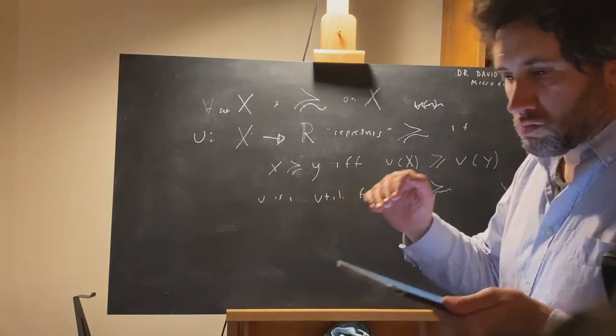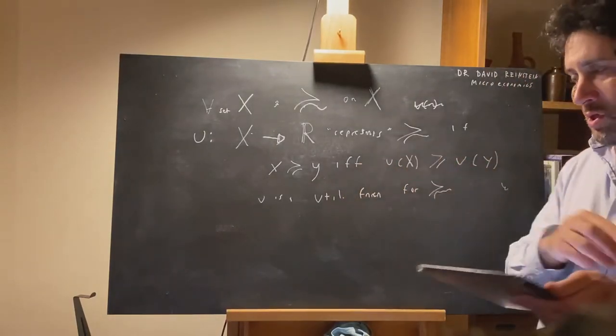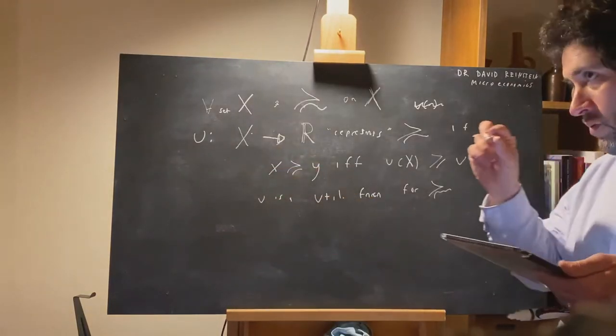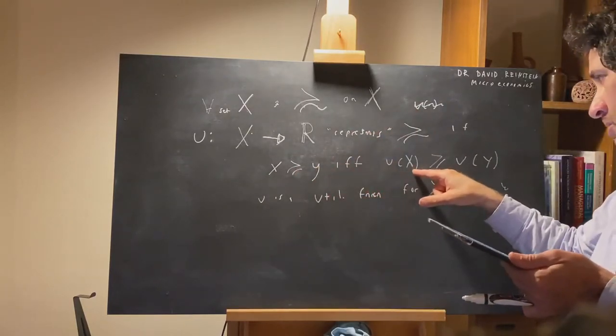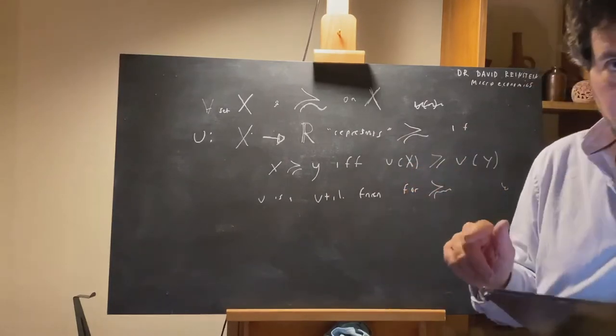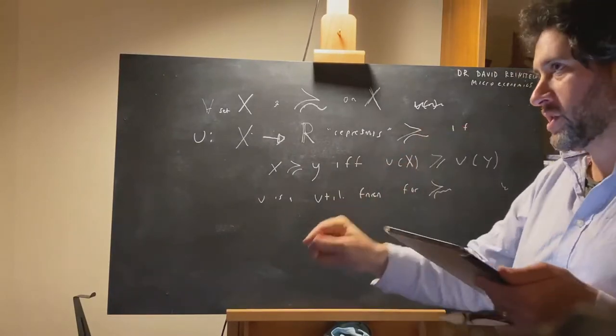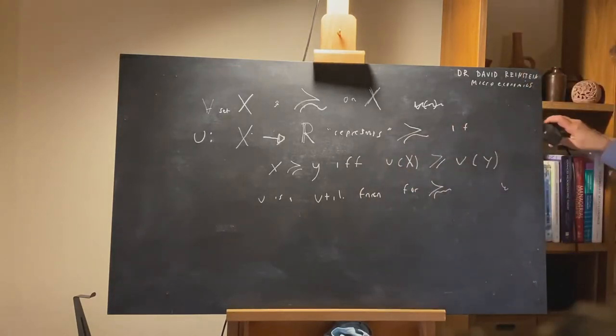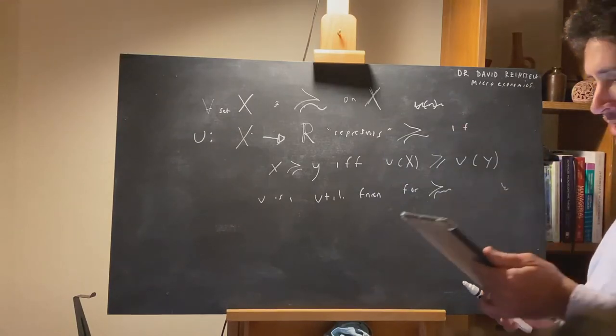If we can come up with a function that's a function of every element in this set, such that whenever one element is at least as good as another, then that element, the function of that element, is given at least as high a number. So if I like frosted flakes at least as much as corn flakes, the function must assign frosted flakes at least as high a number as corn flakes, otherwise we can't say that it represents my preferences.